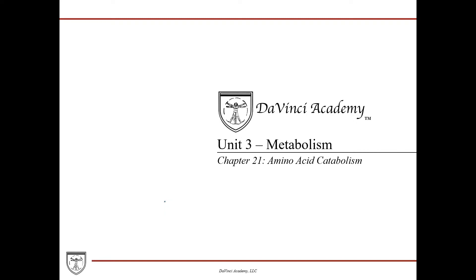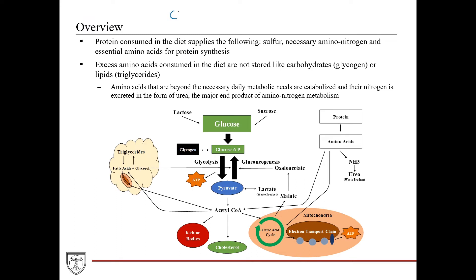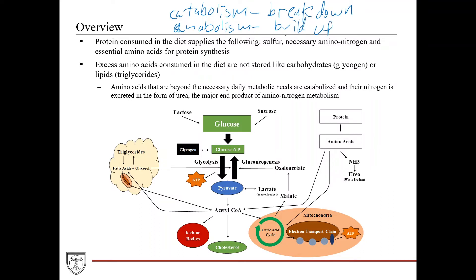This is the first lecture of amino acid metabolism for Unit 3, and we're going to start with amino acid catabolism, which is the breakdown of amino acids. Catabolism is breakdown, and anabolism is buildup. The way I remember that is anabolic steroids are used by people to build up muscle mass, so anabolism means to build up.